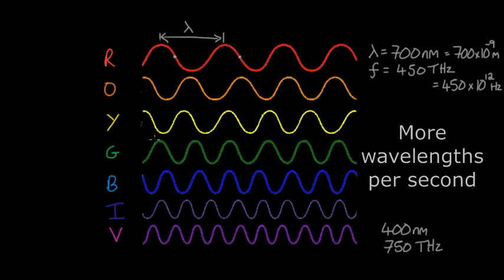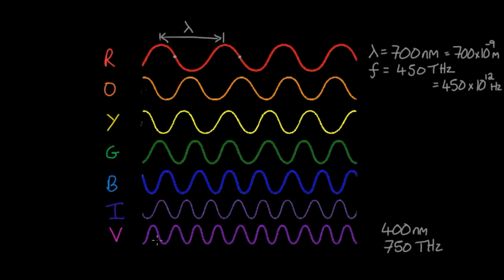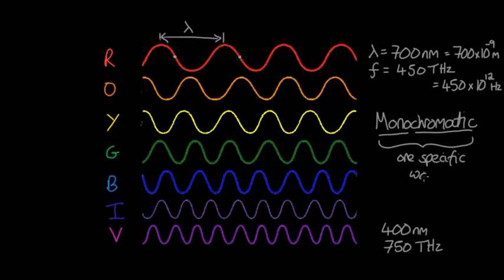There are a couple of words which are useful to understand about visible light. The first word is monochromatic. Mono means one, and chromatic in this case means color. So this just means you've got a wave of one specific wavelength, and that means it will have a specific frequency.